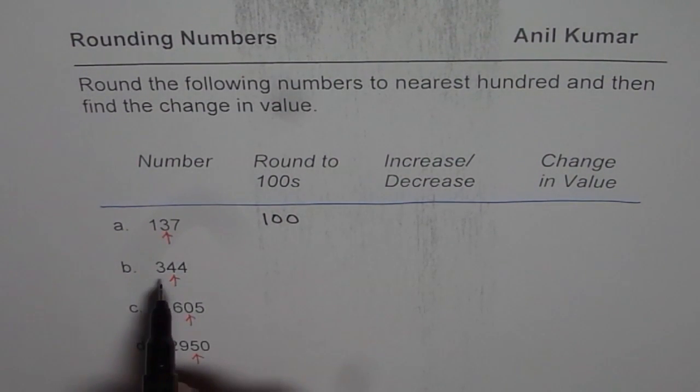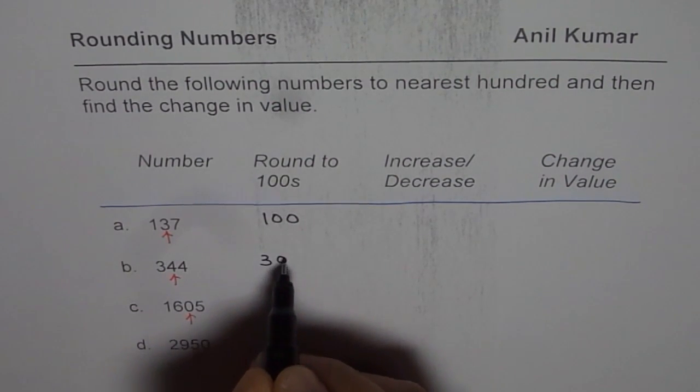344. Should I round to 300 or 400? Well, it depends on this position, which is 4. That means round to a lower number and that is 300 in this case.